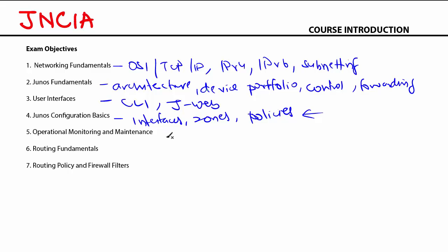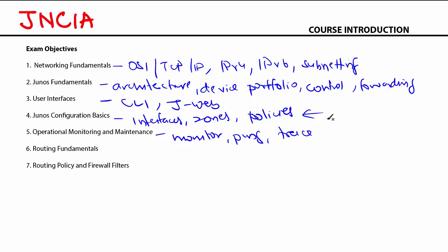We'll then talk about operational monitoring and maintenance, which is more or less troubleshooting — obviously at a very basic level for JNCIA. We'll look at things like monitor commands, ping commands, and trace commands. So basic troubleshooting will be taken care of here in operational monitoring and maintenance.